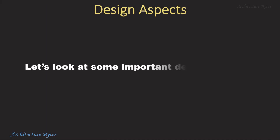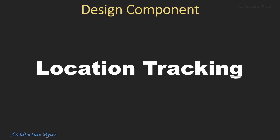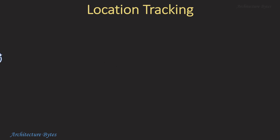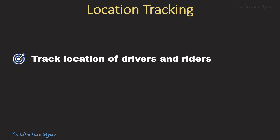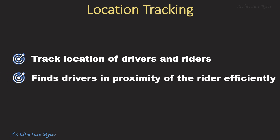Let's look at some important design aspects now. Location tracking — what does it do? It tracks the location of drivers and riders and finds drivers in proximity of the rider efficiently. But how does it do it?